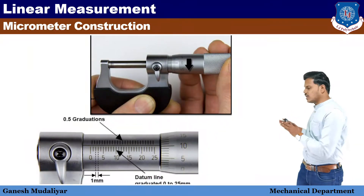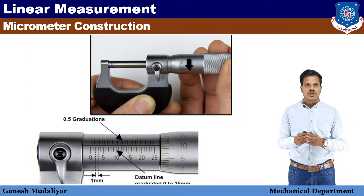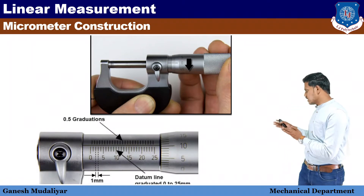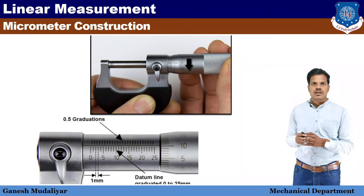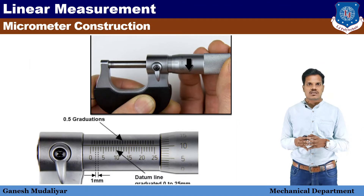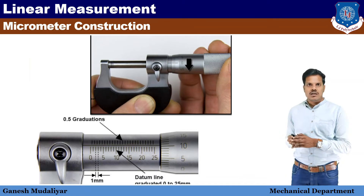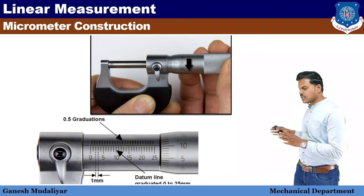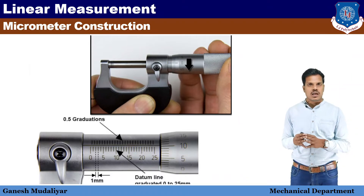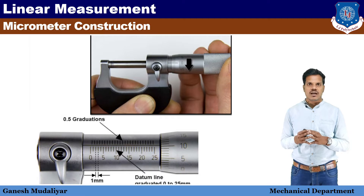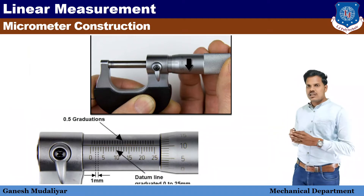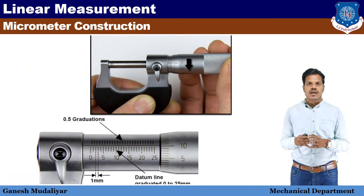Let us discuss about the least count of this micrometer. Here you can see the main scale reading and there are 50 divisions — that is 50 markings. The main scale reading is 0.5 mm and there are 50 divisions on the circular scale. So, least count equals 0.5 divided by 50 divisions, that is equal to 0.01 mm. That is the least count of the micrometer.